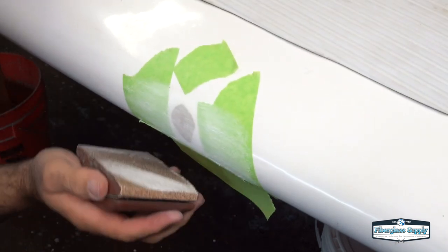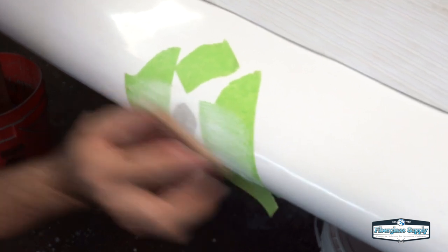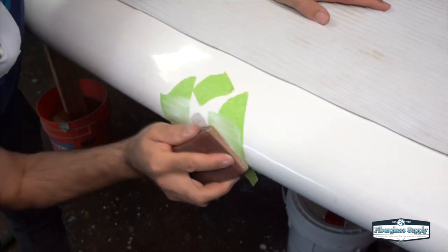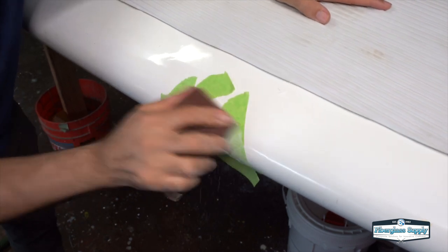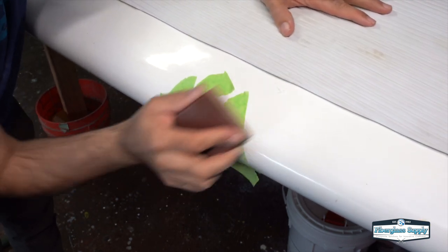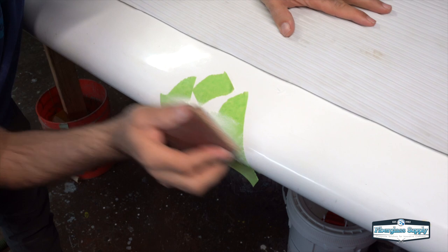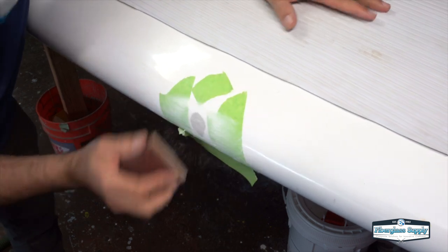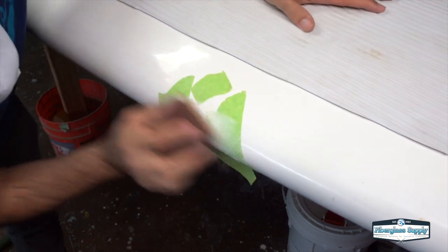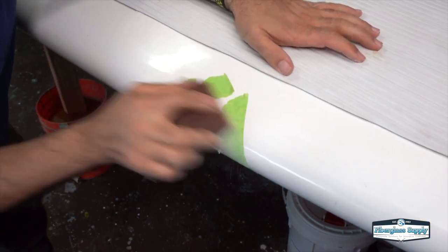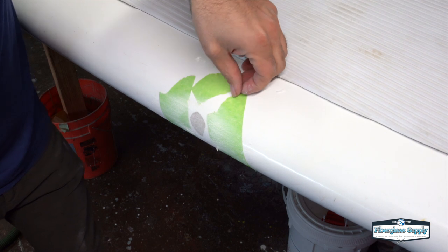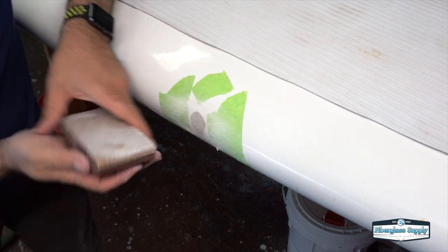Notice we're using a 3M rubber sanding block. The reason we're using a sanding block is that allows us to hit the high areas and knock those down and not dip into the low areas. If we did this without a sanding block, you know, if we use just our hand and sandpaper, our fingers are going to fall down into the lows and we're going to sand the lows as well as the highs and we just don't get as fair an area and it doesn't work as well.